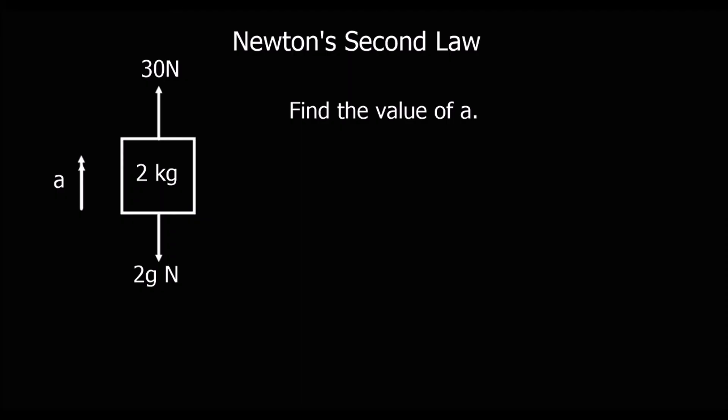One more. Pause the video, give it a go, and press play when you're ready for the answer. We've got F equals MA. F is the resultant force, so forces up minus forces down: 30 minus 2G equals MA, which is 2A.